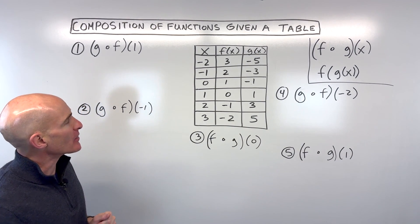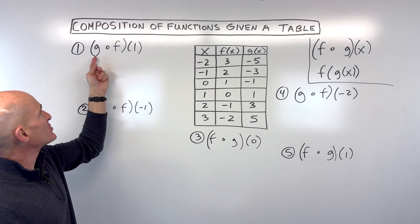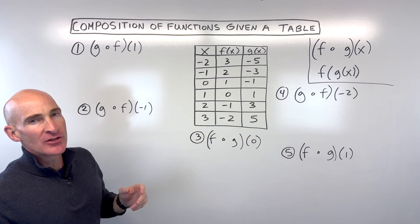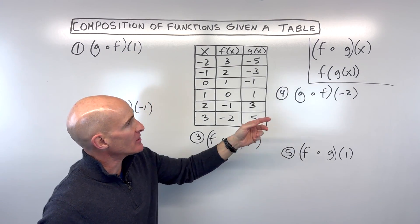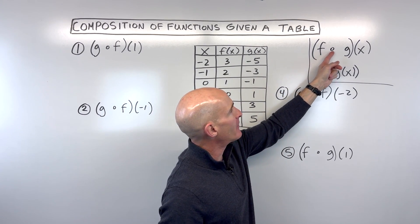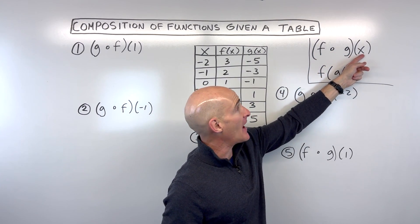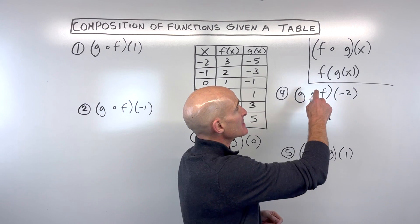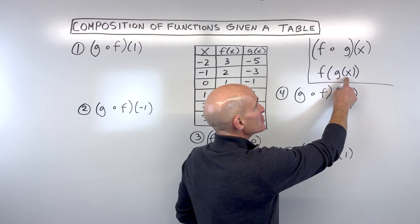So we're given this table here, and we're trying to figure out what is g of f of one. Just a quick note about the notation. You'll see it written like this: f of g of x. The way I like to write it is in this notation right here: f of g of x.